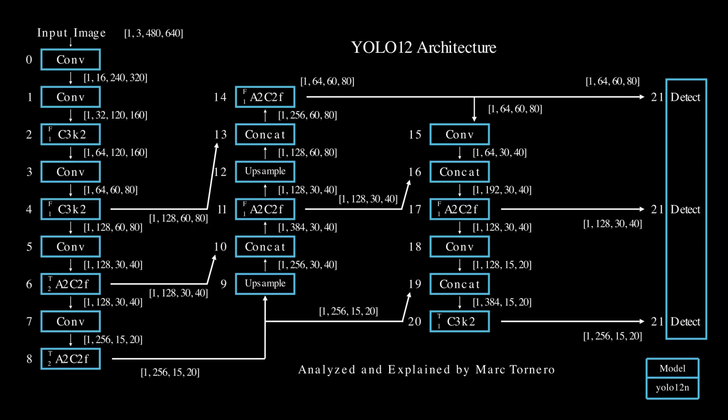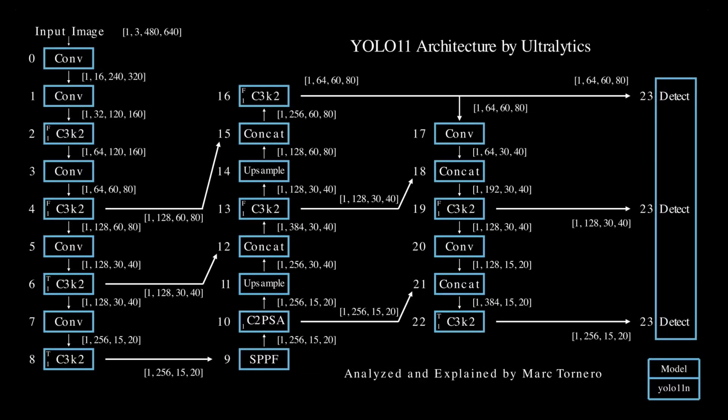As mentioned earlier, the innovations in YOLO12 are best understood in comparison to the model it builds upon, Ultralytics YOLO11. Both are state-of-the-art models and choosing between them depends on factors like your dataset, speed requirements, and training preferences. Let's now look at the key architectural differences between YOLO11 and YOLO12.